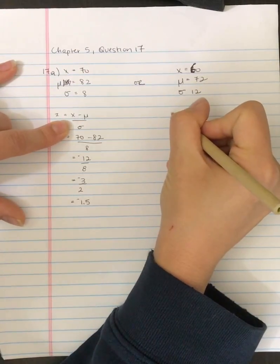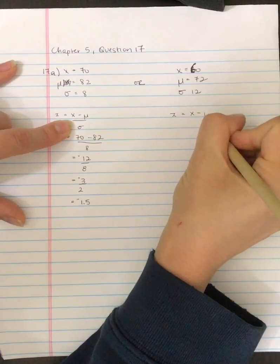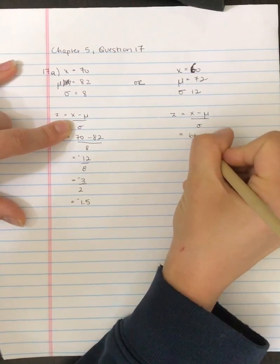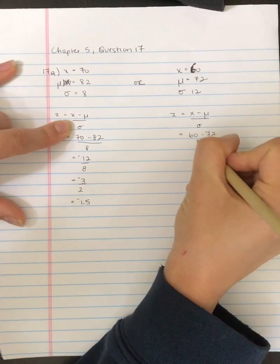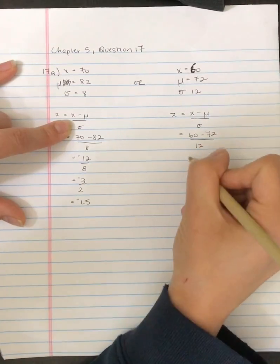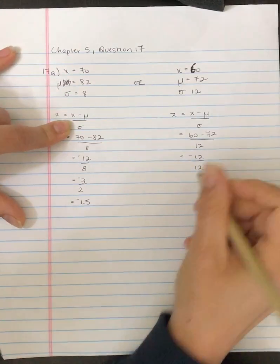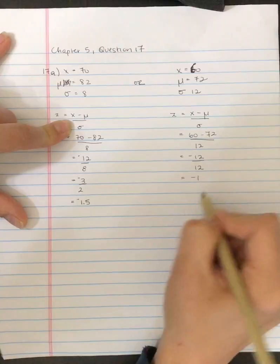Here we've got z equals X minus mu divided by the standard deviation. We've got 60 minus 72 divided by 12. That's negative 12 divided by 12 which is equal to negative 1.